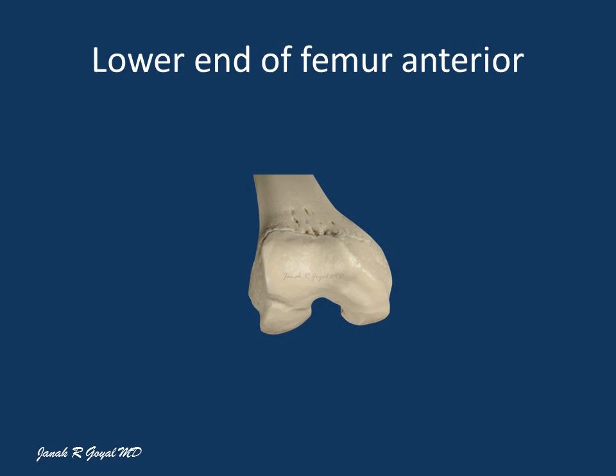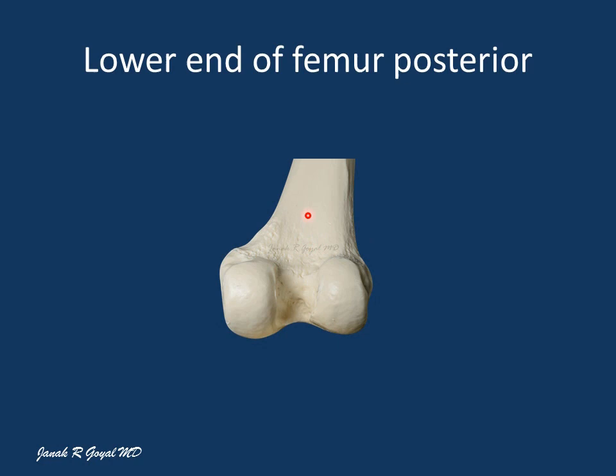The posterior surface of the lower end of the body of the femur has a flattened triangular popliteal surface which is bounded by medial and lateral supracondylar lines. The adductor tubercle is located on the posterior superior aspect of the medial condyle and gives attachment to the adductor magnus. The lateral head of gastrocnemius is attached to a small depression immediately above the lateral epicondyle, and the sesamoid bone fabella is commonly found in the attachment of the lateral head of gastrocnemius.